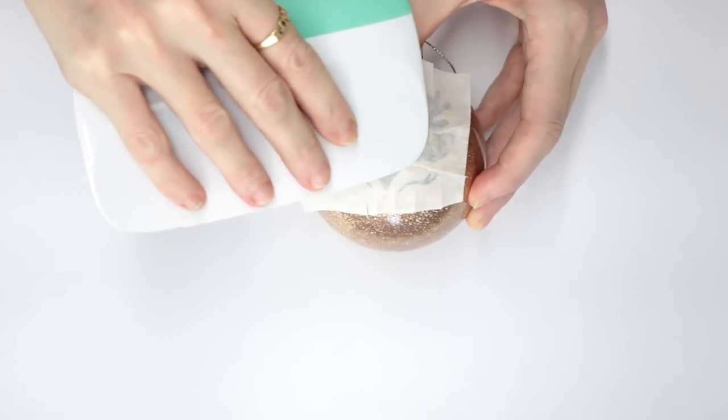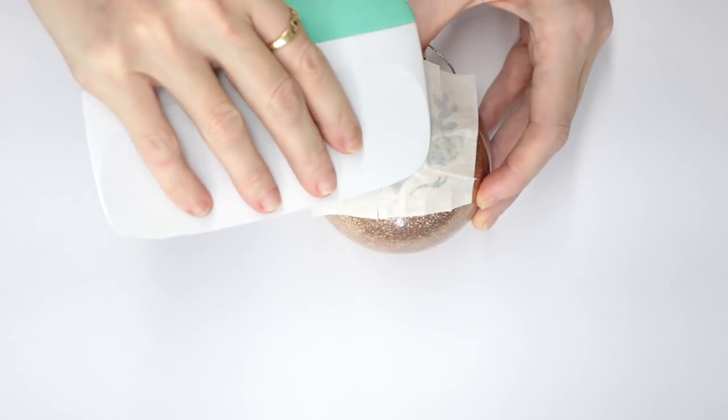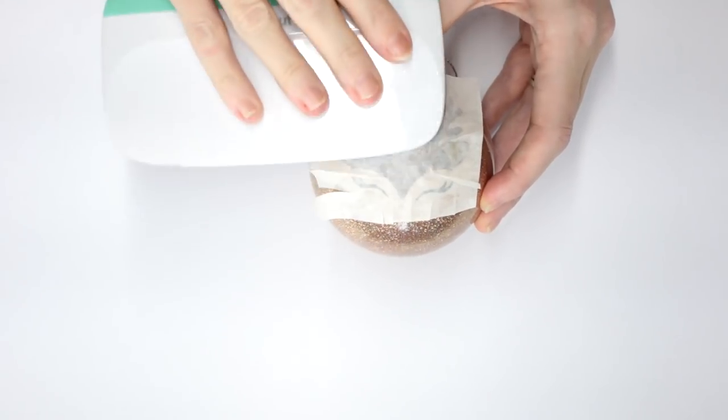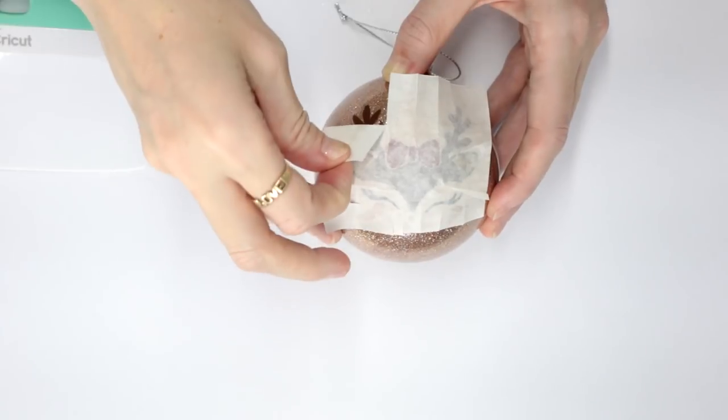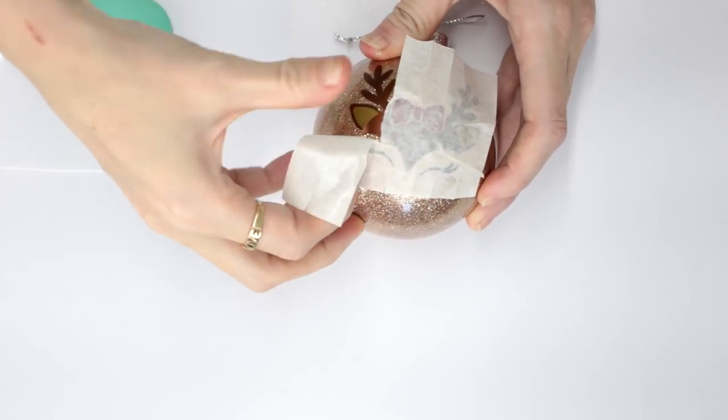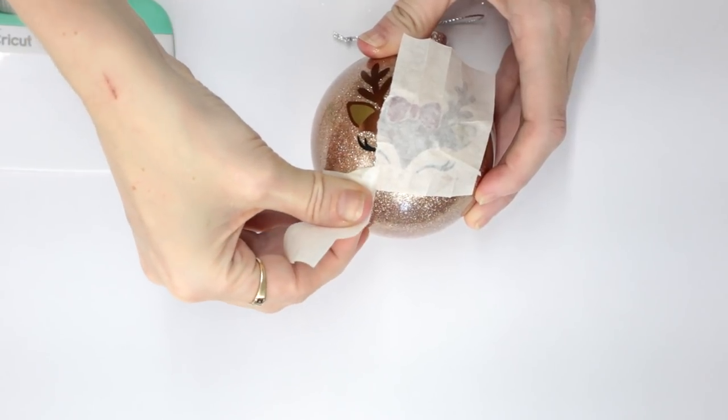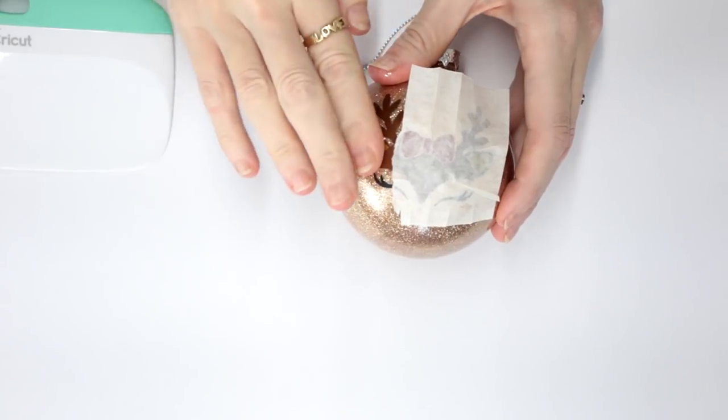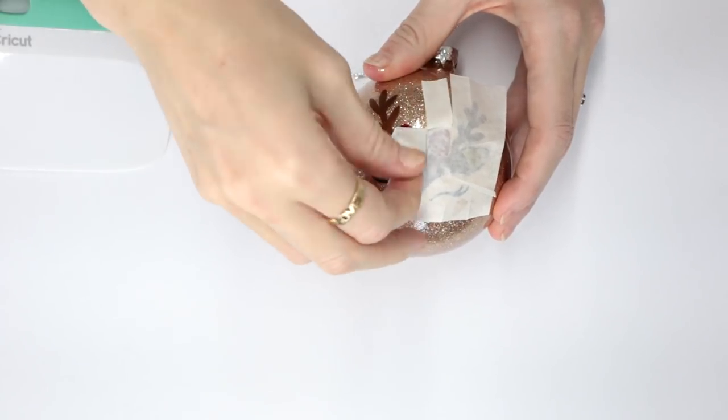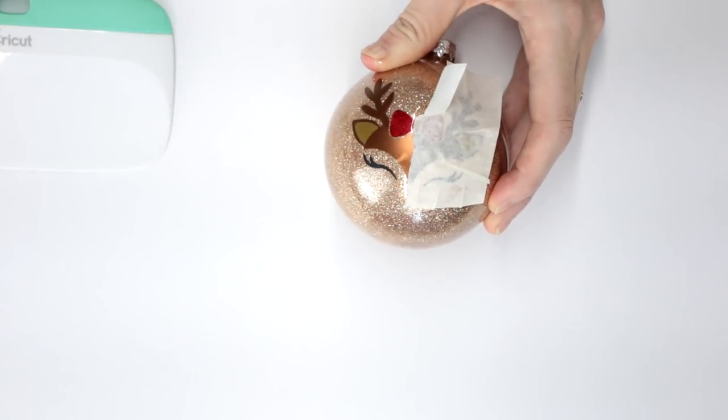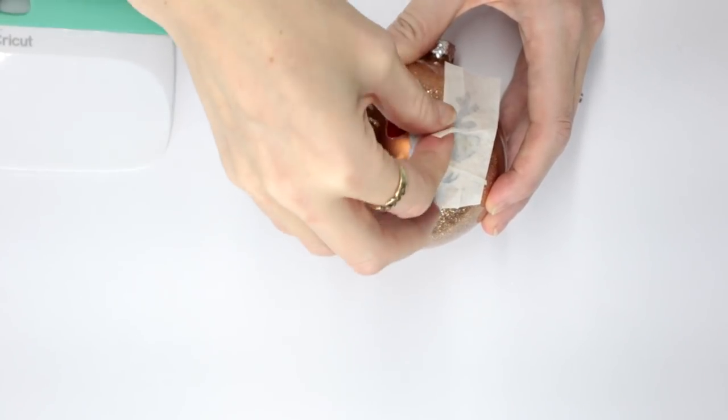Go in with our scraper and just start working our vinyl to our bauble. I always use the flat edge of my scraper as I find this works really well. Come in and we can start removing our transfer tape. Because it's paper transfer tape, you can just tear it off in strips. I find that this is super easy to do, especially with something like a balloon. This makes life so much easier just to be able to tear off strips.